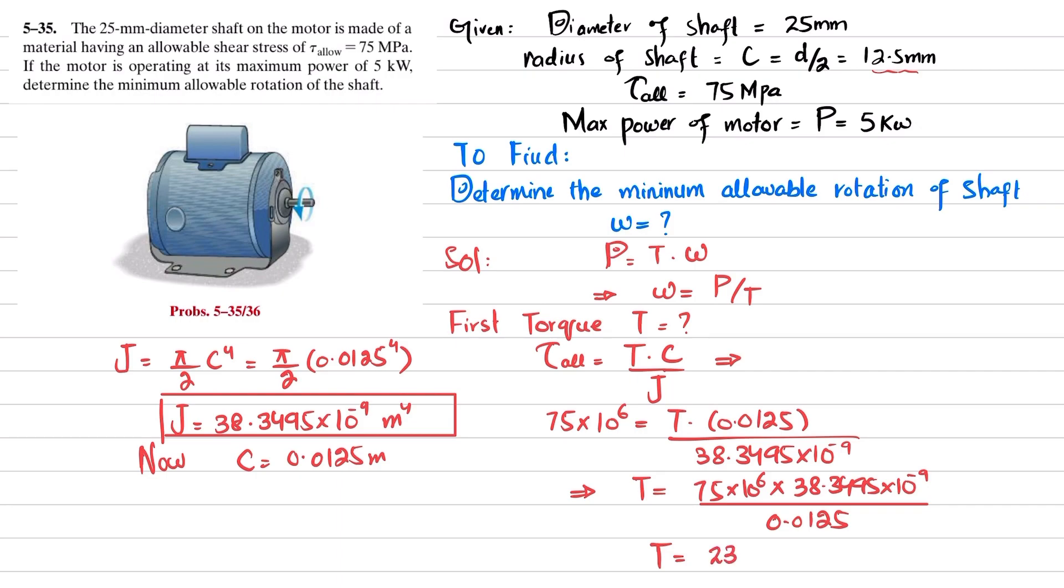When you calculate it, you will get torque is equal to 230.10, and the unit will be newton meter. Now you have this torque, so you can just put it in this formula. From here, ω is equal to P divided by T. So power is 5 kilowatts, so 5 times 10 raised to power 3 divided by torque is 230.10.